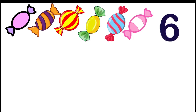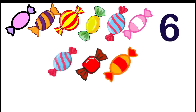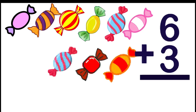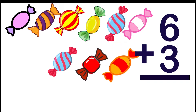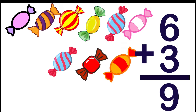Let's have another example. I bought 6 candies, and my sister gave me 3 more. How many candies do I have in all? Again, in order to find the answer, we need to add the numbers. Since I already have 6 candies, 6 on my mind: 6, 7, 8, 9. So, I got 9 candies in all.